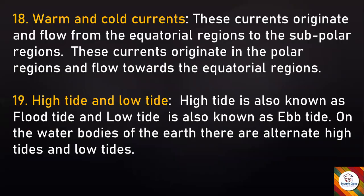Warm and cold currents: Warm currents originate and flow from the equatorial regions to the subpolar regions. Cold currents originate in the polar regions and flow towards the equatorial regions.